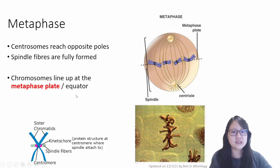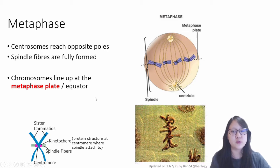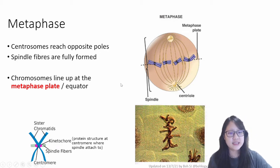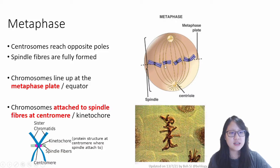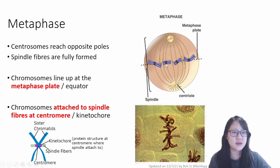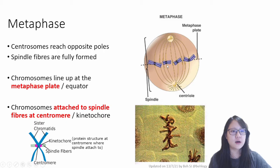'Equator' means the same thing if you wish. You can see them line up, and the chromosomes are attached to the spindle fibers at the centromere as well. Now the spindle fibers are definitely fully formed — previously just forming, now fully attached and fully formed.